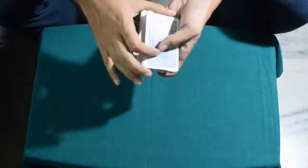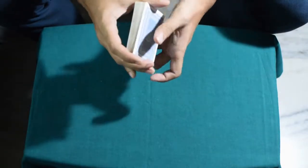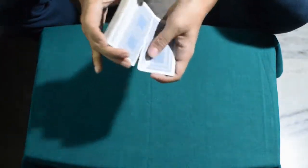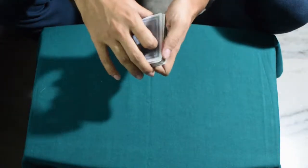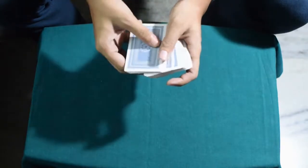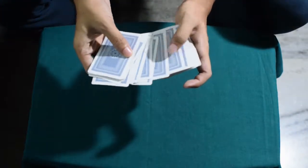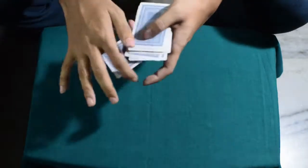So for this trick, we go up to the spectator and shuffle the cards, and then we ask the spectator to select any card they want. Let's say they chose this card here.